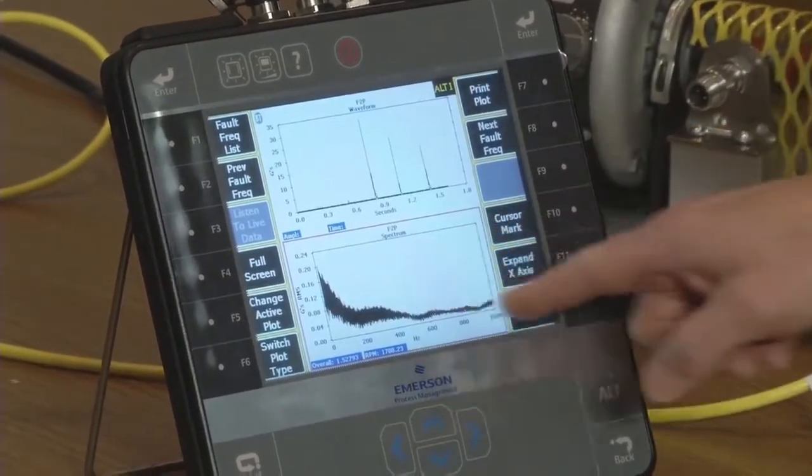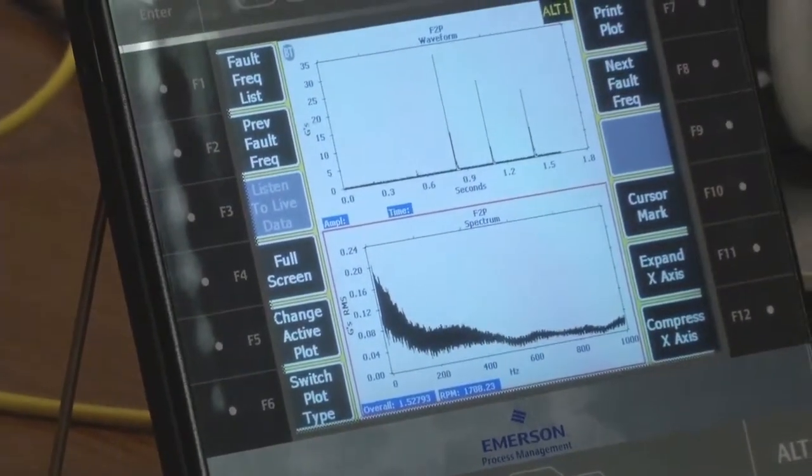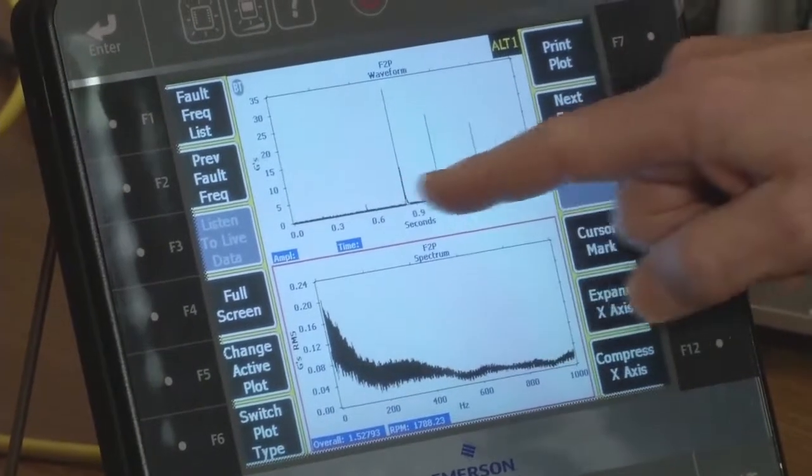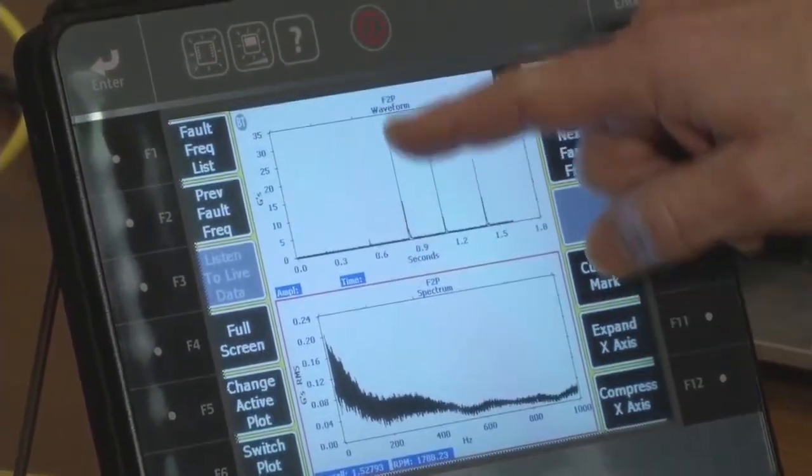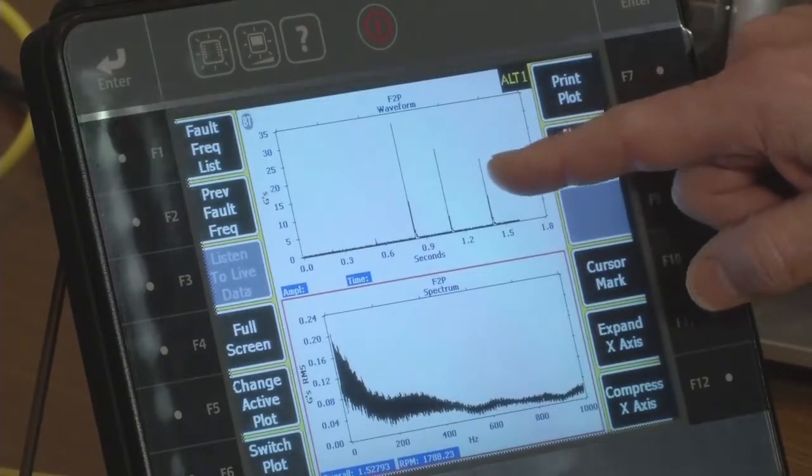And what we see on the waveform plot from the peak view is these specific peaks are where I was actually tapping. And you can see that the g level on these peaks are 30 g's. This is because these taps are very instantaneous small quick bursts of energy.